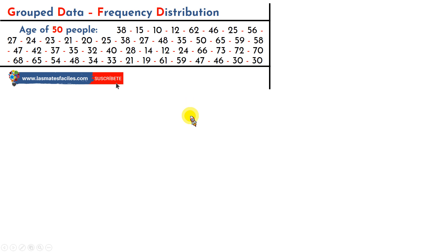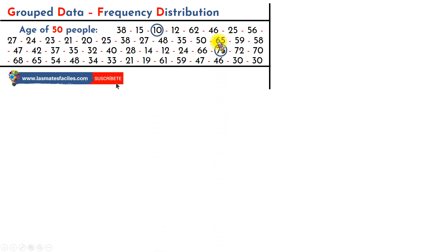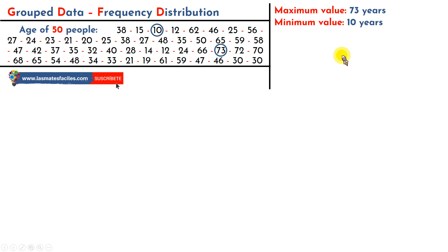As the first step, we're going to identify the minimum value and the maximum value — that is the minimum age and the maximum age. We can observe that the youngest is 10 years old and the oldest is 73 years old.